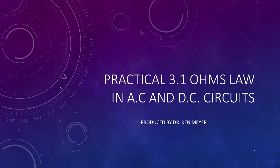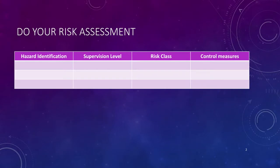Hi, it's Dr. Ken here with you for Practical 3.1: Ohm's Law in AC and DC circuits. In this practical we're looking at the effect AC and DC has on a resistive circuit — only a resistive circuit. Don't forget to do your risk assessment: identify the hazards you might encounter, the supervision level you might need, the class of risk (high, low, or medium), and what control measures you're going to put in place.